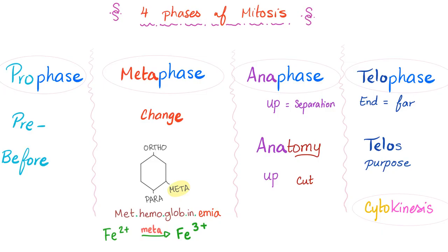After telophase, you have cytokinesis. Cyto means cell, kinesis from kinetic — to move. So the cell will basically move away from each other — hashtag cell division. Pro: before the metaphase. Meta: the change. Ana: up, which means separation. Telo: far, it's the end, the end result, the purpose of mitosis. And then cytokinesis: separation of the cell into two different cells.